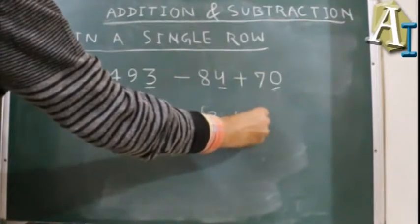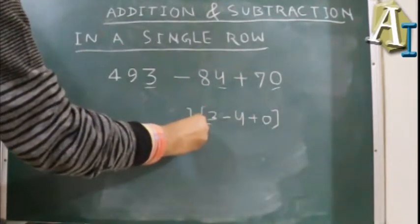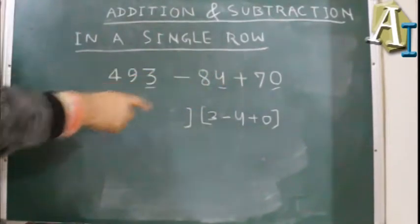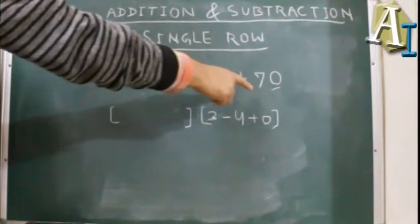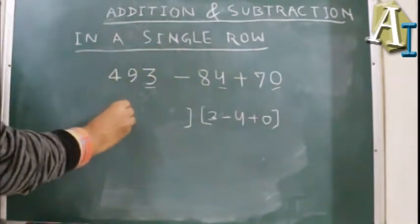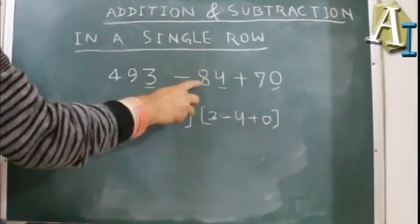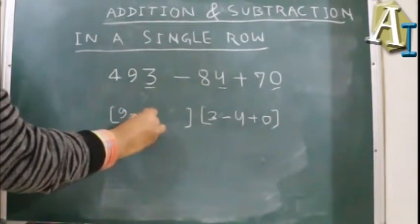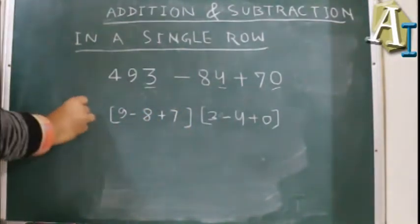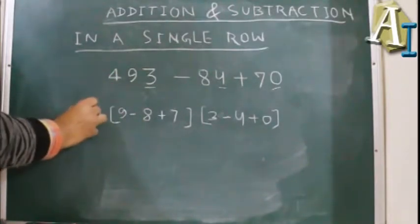Plus 0. Then coming to the tens place, which is 7 minus 8 and 9, so here we have 9 minus 8 plus 7. And in the hundred place we have 4.